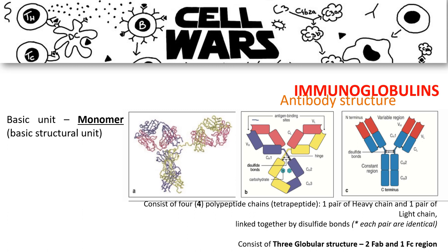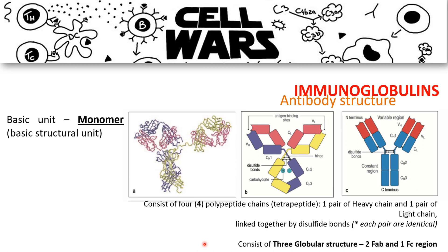The basic structure consists of two Fab regions — which stands for Fragment Antigen Binding — and one Fc region, which stands for Fragment Crystallization. Disulfide bonds are present throughout, along with carbohydrate content and peptide linkages. While the antibody is not simply a straight Y-shape, we use that concept to more easily understand its structure.